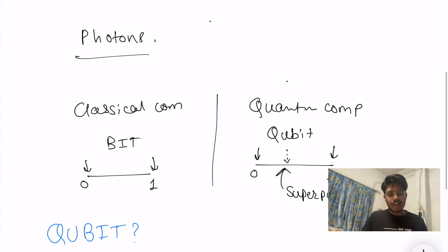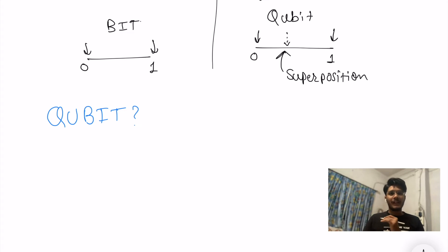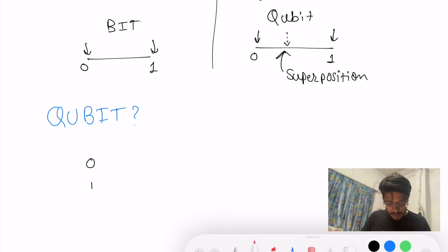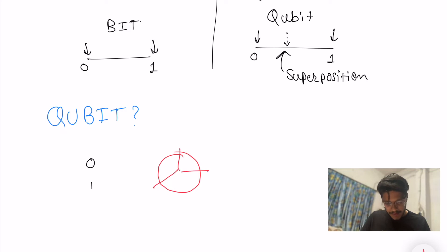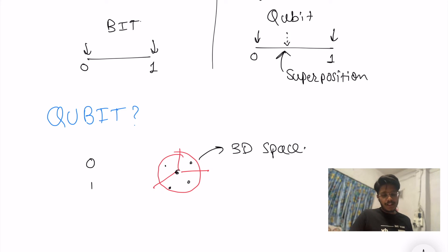A qubit can store 0, 1, or a combination of these two at a time, so it is able to store much more information compared to a normal bit. A classical computer can store either 0 or 1, but a qubit can store any combination — it can be here, here, or anywhere on this 3D display. This is how a qubit can work and store a lot of information.